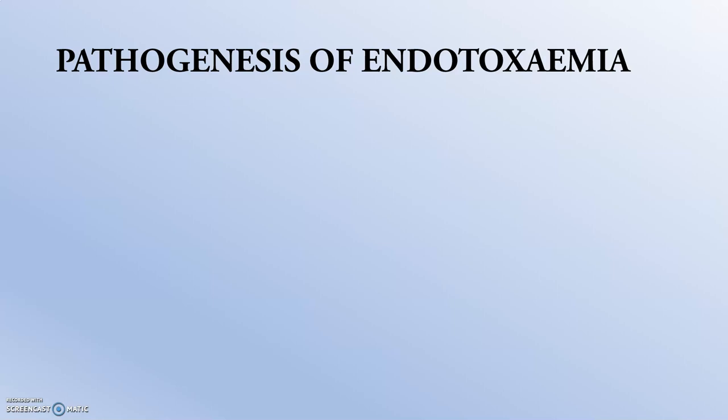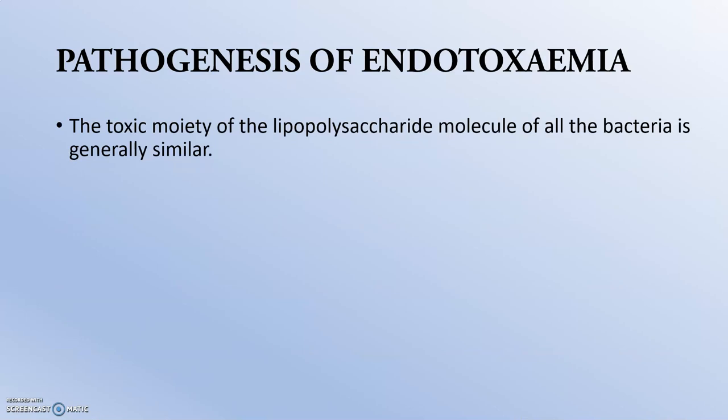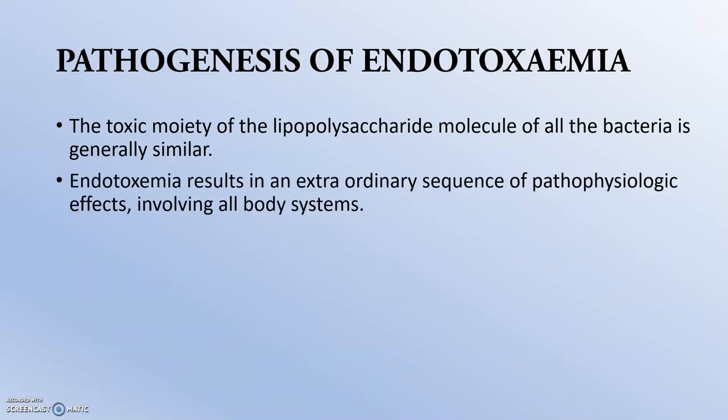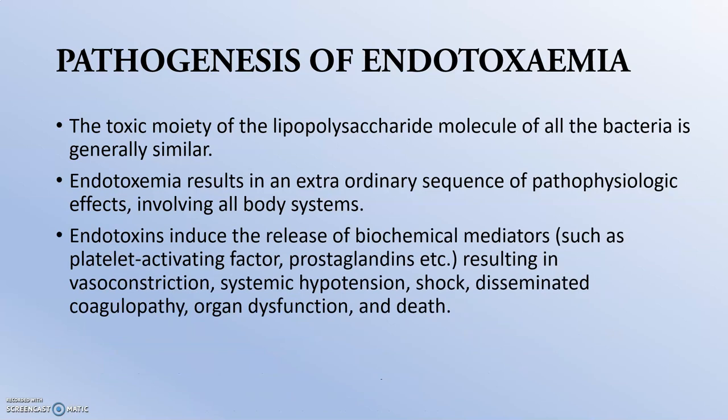Moving to the pathogenesis of endotoxemia — how does it attack the body system? The toxic moiety of the lipopolysaccharide molecule of bacteria is generally similar. Endotoxemia results in an extraordinary sequence of pathophysiological effects involving all body systems. Endotoxins induce the release of biochemical mediators such as platelet activating factors, prostaglandins, histamine, and serotonin, leading to regional vasoconstriction and systemic hypertension. Sometimes extensive endotoxin release leads to anaphylaxis and anaphylactic shock, which can lead to organ dysfunction.